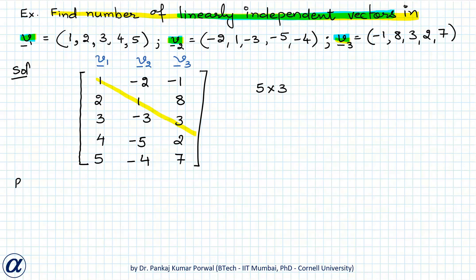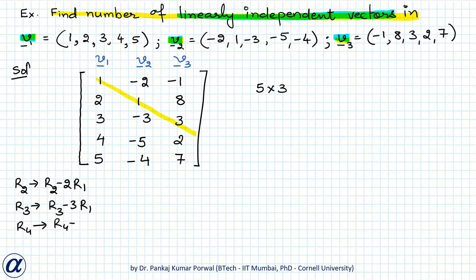We start with R2 → R2 minus 2·R1, R3 → R3 minus 3·R1, R4 → R4 minus 4·R1, and R5 → R5 minus 5·R1.